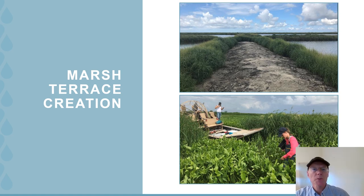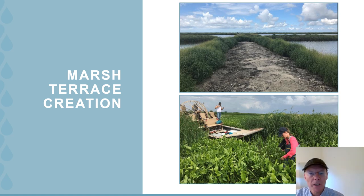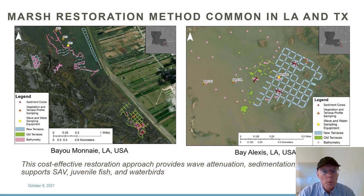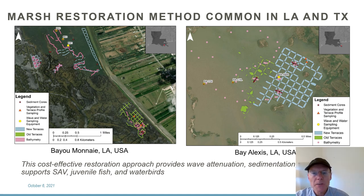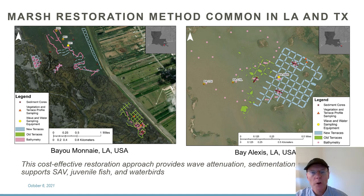I'm going to be talking about three projects. The first one is an approach for marsh creation, which is formation of marsh terraces. You can see a photograph in the winter on the top and in the bottom with abundant floating and aquatic SAV. Marsh terraces are primarily built to limit shoreline erosion, but they also have a host of ecosystem benefits for juvenile fish, supporting SAV and also aquatic birds.